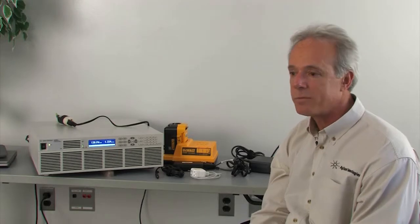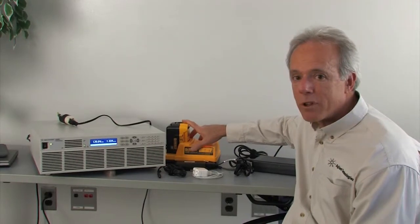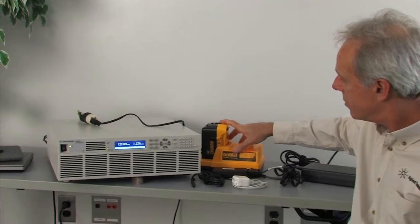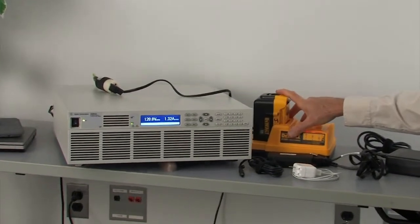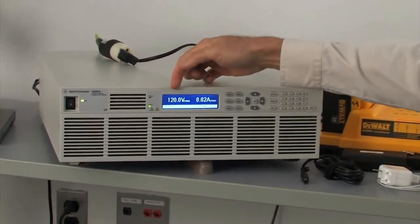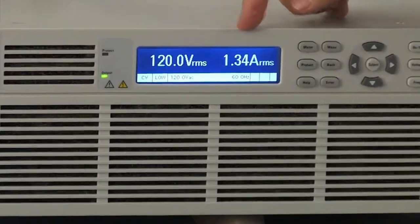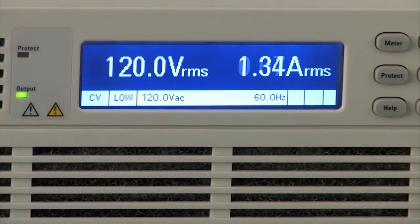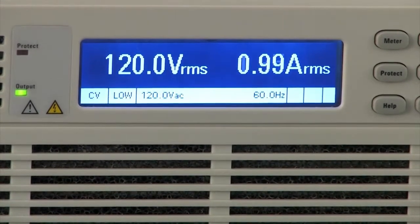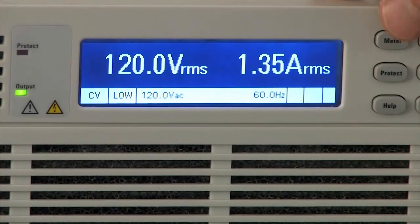So I also want to show you some of the measurement features that are built into this AC source. I still have the power adapter for the reciprocating saw battery hooked up. And I have the output set for 120 volts. And you can see the current being drawn is about 1.3 amps. And it's varying a little bit, probably because there's some pulsing going on for the battery. But there's other measurements built in as well.